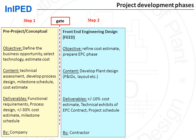Step two is called the front-end engineering design. It involves a specialist contractor. The oil and gas company does not do this internally, but enters into a service contract with a contractor specialized to develop such preliminary plant design, whose objective is to refine the cost estimate up to a precise level of plus or minus 10%, which is the level required to take the final investment decision, which will be taken at the end of step two.